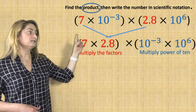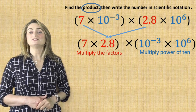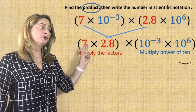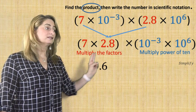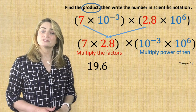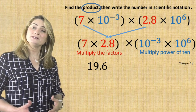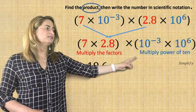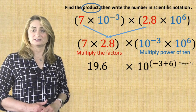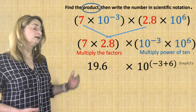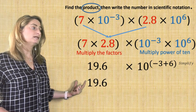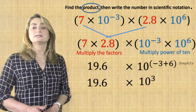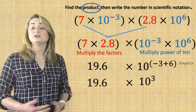The power of 10 is 10 to the power of negative 3 times 10 to the power of 6. Now let's simplify. 7 times 2.8 is 19.6, and if I'm multiplying powers with the same base, you add the exponents. So you have 10 to the power of negative 3 plus 6. Simplify again, bringing the 19.6 down, times 10 to the power of 3, because negative 3 plus 6 equals positive 3.